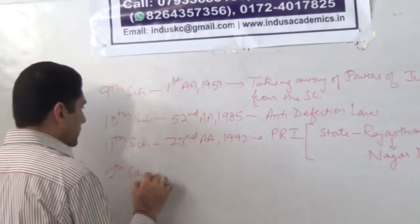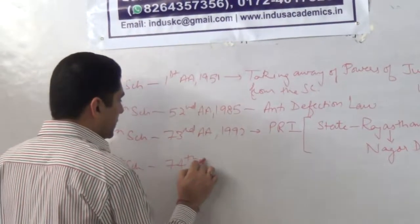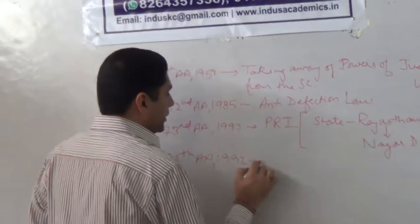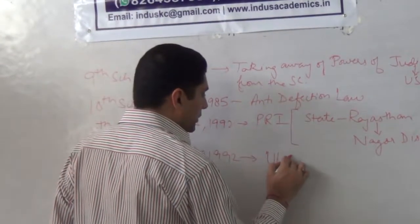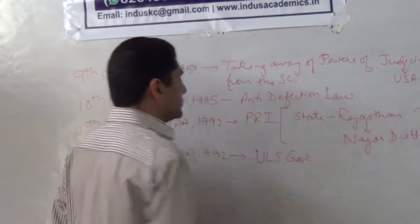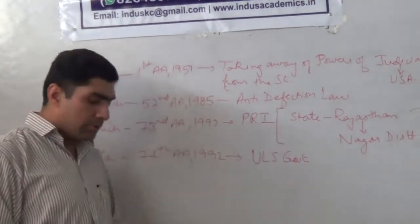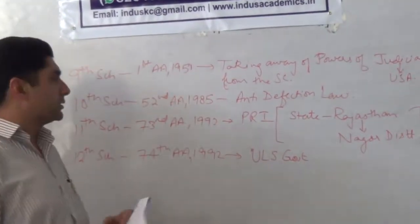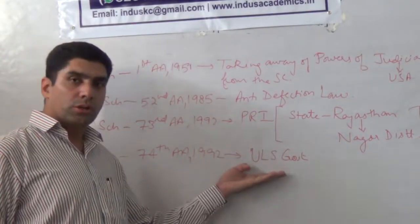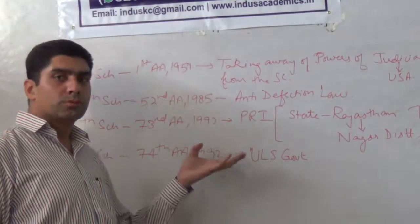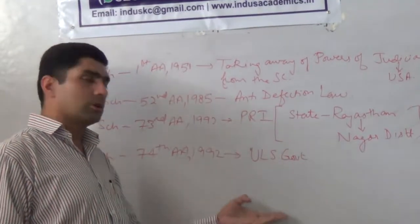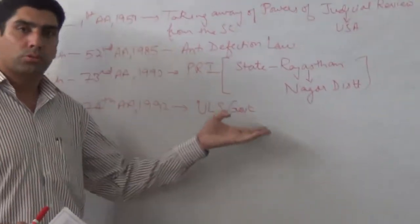12th Schedule — 74th Amendment Act 1992 — and this deals with urban local self-governments. Jis tarah se gaon ke andar panchayaton ka gathan karna zaroori hai, har 5 saal ke baad election karwane zaroori hain, usi tarah jilon ke andar, agar chhota jila hai toh municipal council, aur agar bada jila hai toh municipal corporation ke elections karwane har 5 saal ke baad zaroori hain.